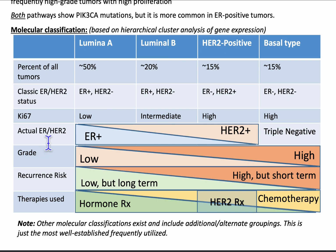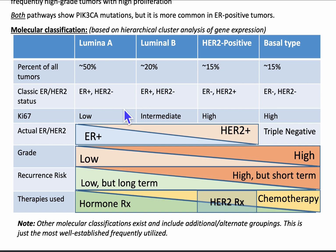In terms of actual ER and HER2 expression, Luminal A will have higher ER expression than Luminal B, and HER2 positive will have high HER2 expression, as you might expect. Basal type will be triple negative for ER, PR, and HER2. Luminal A has the lowest grade and basal type has the highest grade. Recurrence risk for low grade is low but long-term, whereas HER2 positive and basal type have high recurrence but short-term. In terms of therapies: Luminal A and B are ER positive, so hormone treatment; HER2 positive can be treated with HER2-targeted therapy like Herceptin; and basal type is treated with chemotherapy.